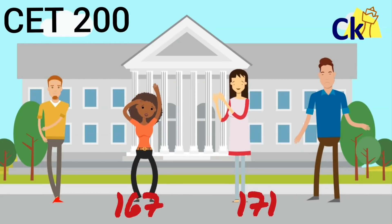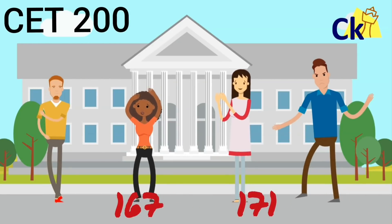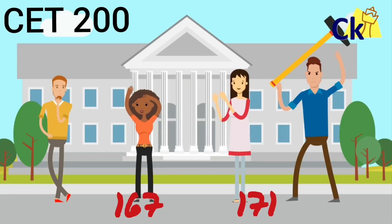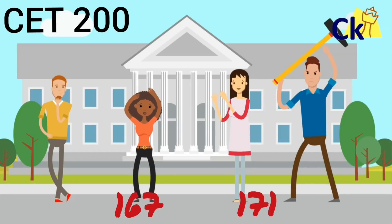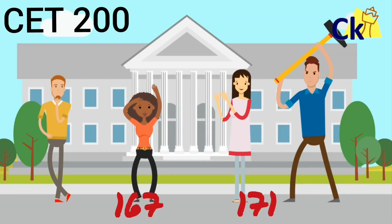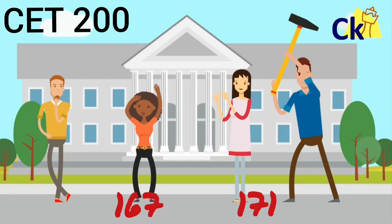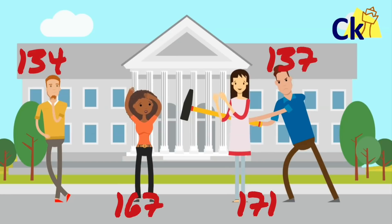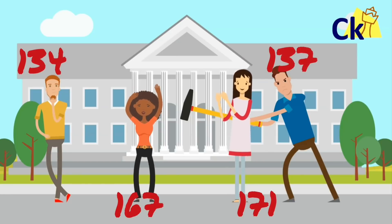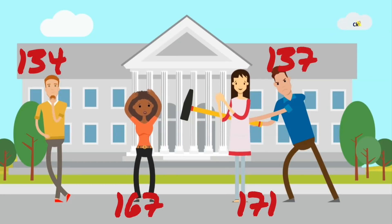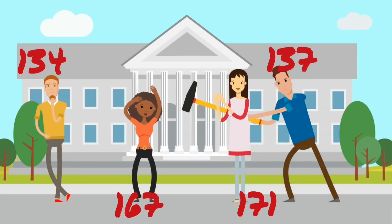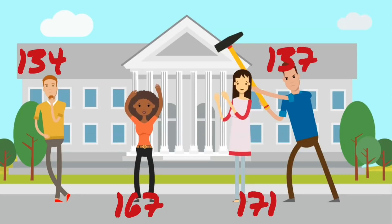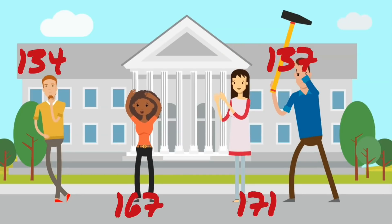Let's take an example of CAT. These two girls are super happy because one of them got 167 and one got 171 — the paper was easy. But the boys are super sad because their paper was very tough, where 134 and 137 was a cutoff out of 200.